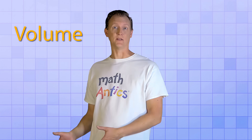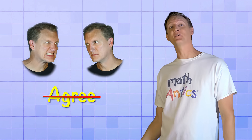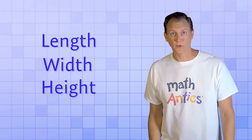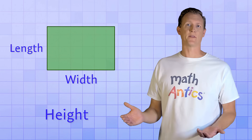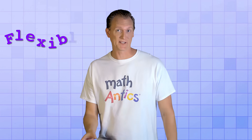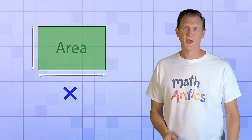Now that you understand what volume is and won't confuse it with surface area, we'll spend the rest of the video calculating the volumes of some basic geometric shapes. But first, a note about terminology. Most of the time people agree on what to call things in math, but not always — especially when it comes to describing the dimensions of geometric objects. For example, a rectangle's two dimensions could be called length and width, or width and height. The actual names aren't important; the key is to be flexible and realize the math concepts are the same even if different words are used.